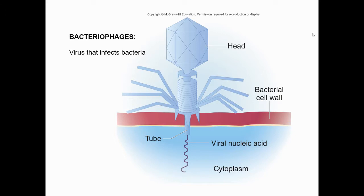Bacteriophages are our complex viruses — they don't just have icosahedral or helical coats; they have both combined, with an icosahedral head containing the nucleic acid and a helical sheath. Their spikes are specialized for attachment to the bacterial cell surface. They inject a protein tube into the cell like a syringe to deliver the nucleic acid — the protein coat never enters the cell, so they don't actually have to penetrate and uncoat; they shoot the nucleic acid directly through the cell wall and membrane.